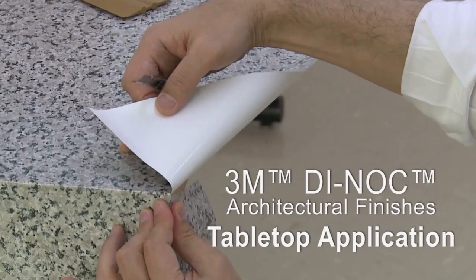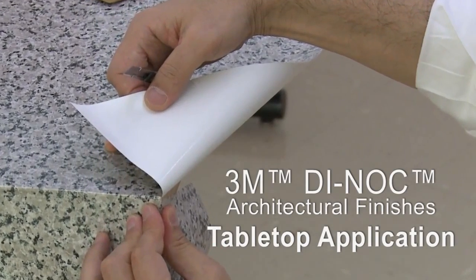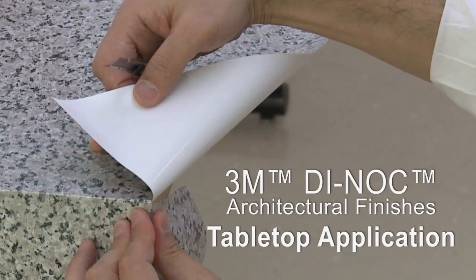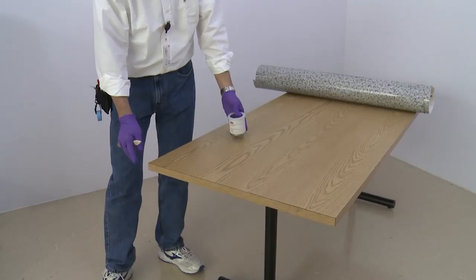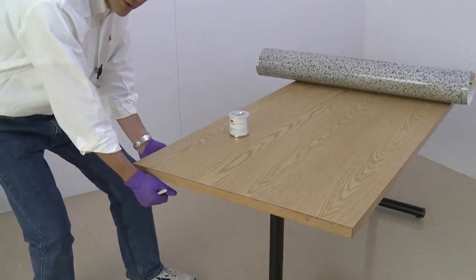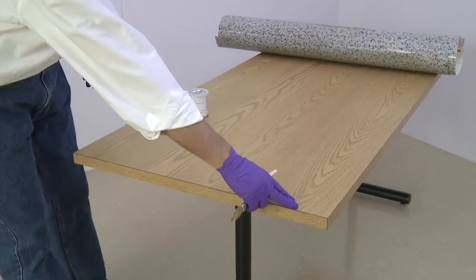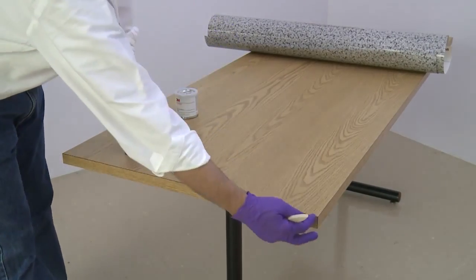In this video, you will learn how to successfully apply Dynok brand architectural finishes to tabletops. You will learn two ways to wrap the film around corners. One is by conforming heated film around the corner. The other way is a cut and overlapped corner, which is the preferred method.